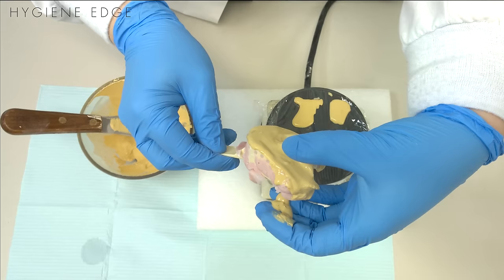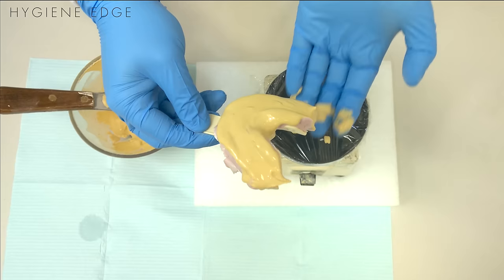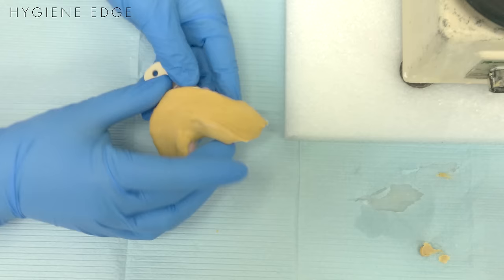If the stone goes around the impression and it dries, it will lock the impression in place and sometimes it's really hard to separate the two. So as you rest it to set, make sure that the stone is not wrapping around the tray.